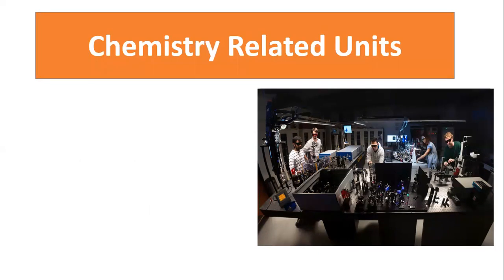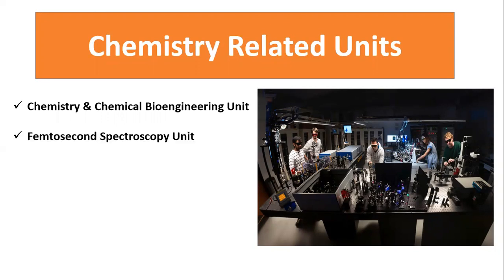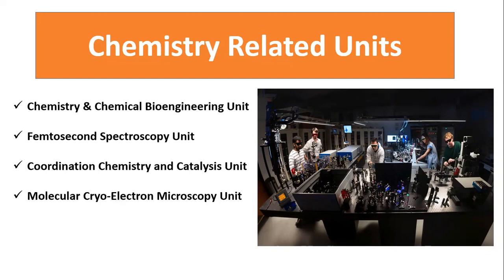Next are the chemistry-related units. If your background is biochemical engineering, you can apply to the first chemistry unit. The second is the Femtospectroscopy unit — if your specialization is in structural chemistry, you can apply here. The third is the Coordination Chemistry and Catalysis unit, and the fourth is the Microscopy unit, where you can explore the molecular basis of chemicals. There are more than four chemistry-related units; you can search for them as I'll attach a link in the description.